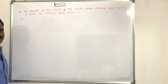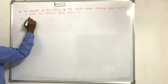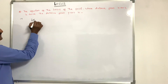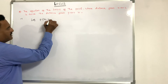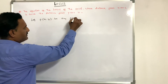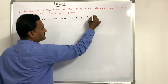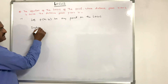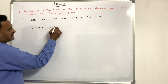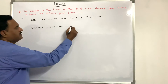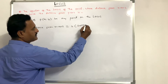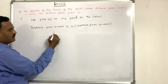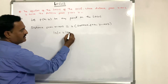The equation of the locus of the point whose distance from x-axis is twice the distance from y-axis. Let P(x1, y1) be any point on the locus. The given condition is: distance from x-axis is equal to twice the distance from y-axis. That is, |y1| is equal to 2 times |x1|.